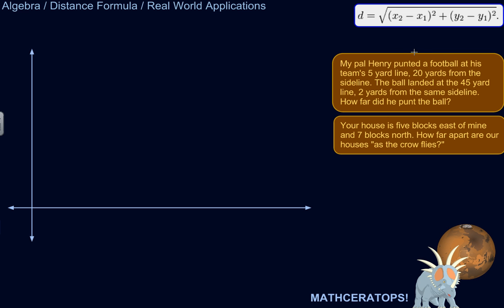My pal Henry punted a football at his team's 5-yard line, 20 yards from the sideline. When the ball landed at the 45-yard line, 2 yards from the same sideline, how far did he punt the ball? So anytime you've got distances given relative to something else, 20 yards from the sideline, at the 5-yard line, 5 yards from the goal line, then you can think of it as a coordinate system.